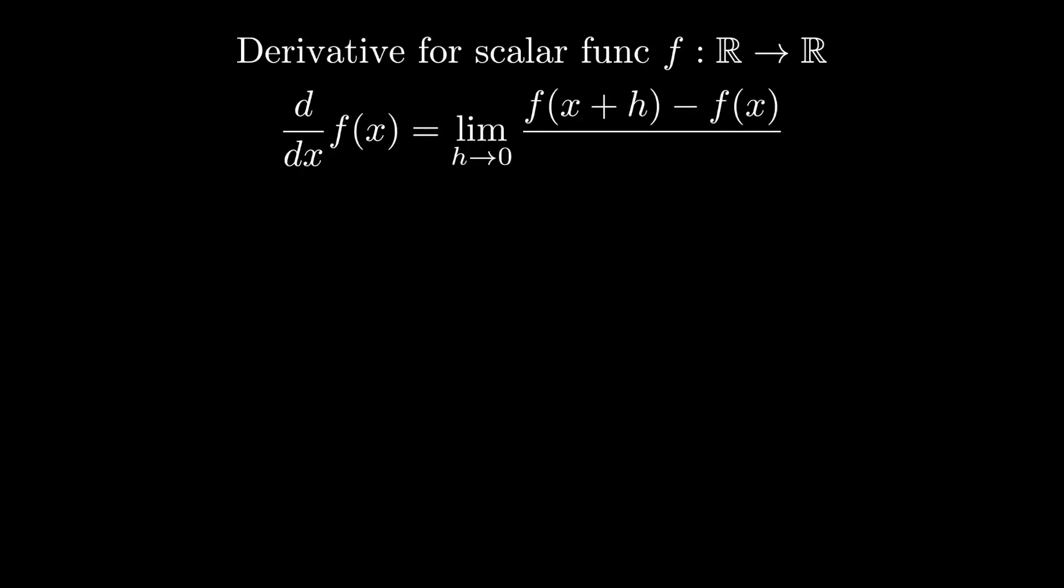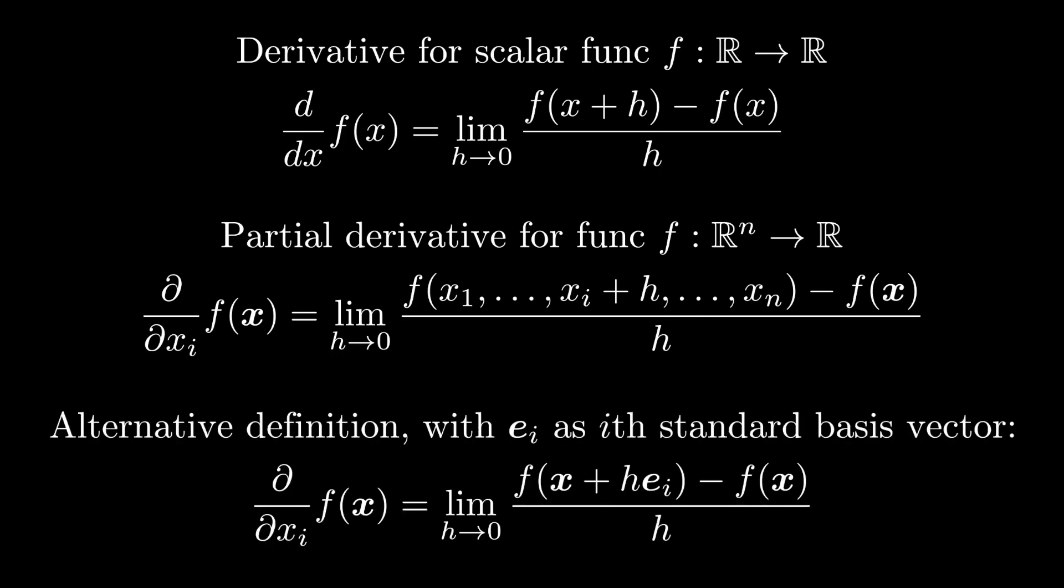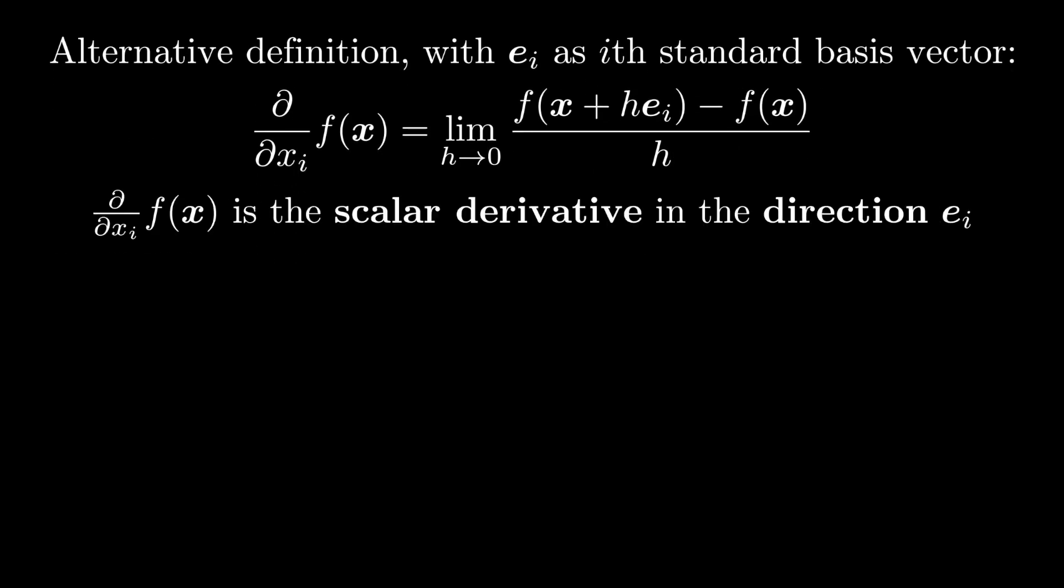To formalize this, let's first remind ourselves of the definition of the derivative of a scalar function. We generalize this to the partial derivative for functions that take vectors as input. Now one way we could talk about the partial derivative is via the limit h where h is scaling the standard basis vector for that dimension. Thus we can think of a partial derivative as being a special case of a directional derivative that's using the standard basis vectors.